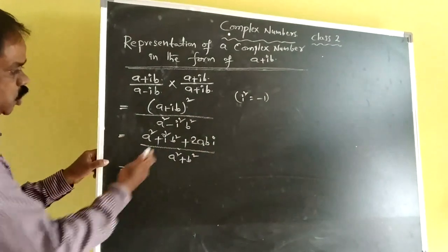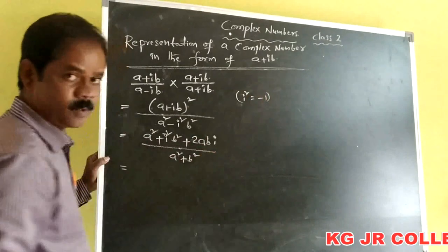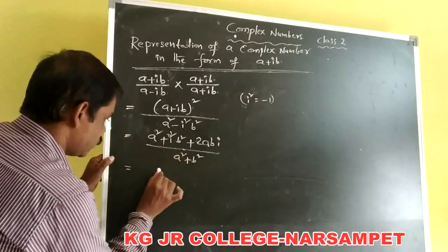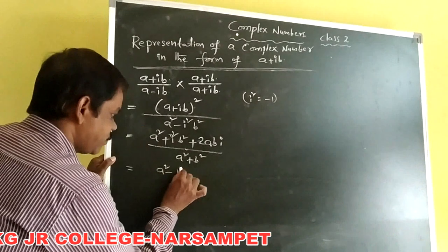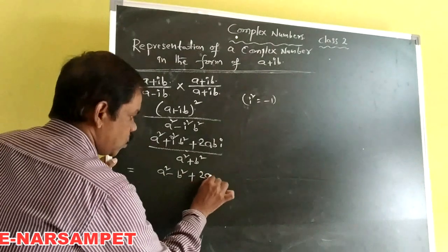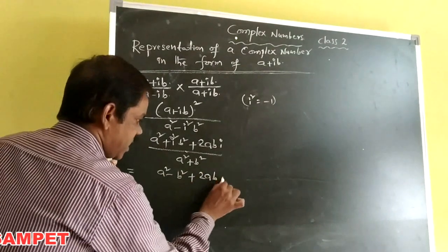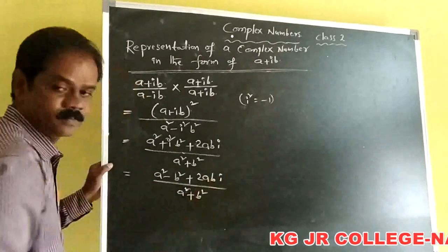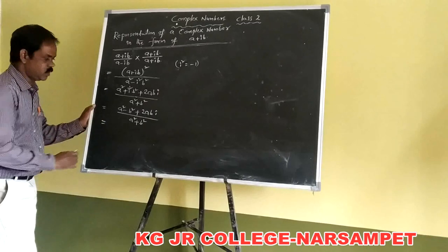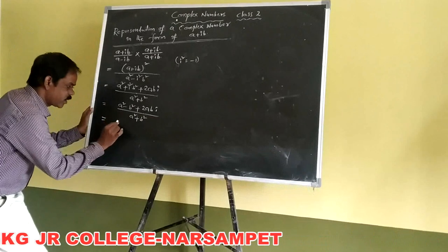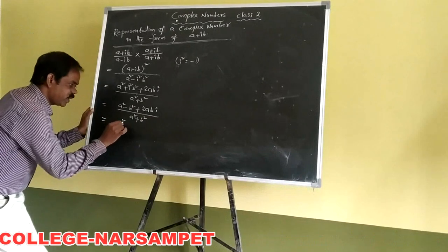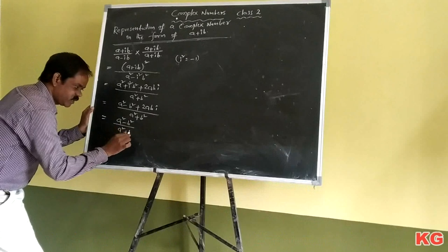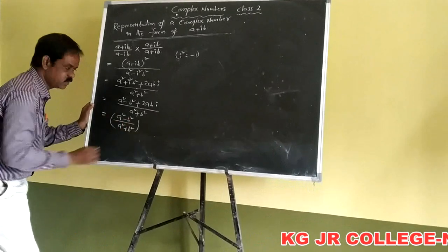We know that i squared value is equal to minus 1. Substituting here, we get A squared minus B squared plus 2ABI, all divided by A squared plus B squared. Now we partition this expression: A squared minus B squared over A squared plus B squared — this is called the real part.